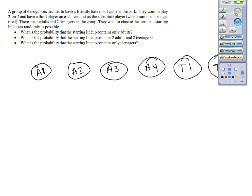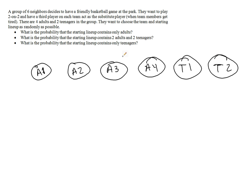Let's look at an example. Suppose you have a group of six neighbors who decide to have a friendly basketball game at the park. They want to play two-on-two and have a third player on each team act as substitute when members get tired. There are four adults and two teenagers in the group. They want to choose the team and starting lineup as randomly as possible.